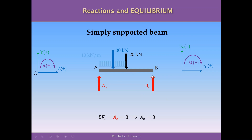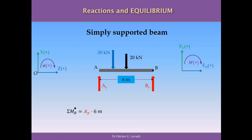At this point, we have a simple supported beam subjected to two punctual loads with two vertical reactions at A and B respectively. I will now write the equation of summation of moments at point B, which is where the roller is located. The first moment is produced by the vertical reaction AY: force multiplied by perpendicular distance to point B. This moment is positive because the rotation AY tends to produce around B is clockwise, which is positive in our convention.